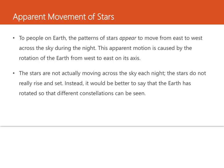Let's look at the apparent movement of stars. To people on earth, the patterns of stars appear to move from east to west across the sky during the night. This apparent motion is actually caused by the rotation of the earth from west to east on its axis. The stars are not actually moving — they do not really rise and set. Instead, it is better to say that the earth has rotated so that different constellations can be seen.